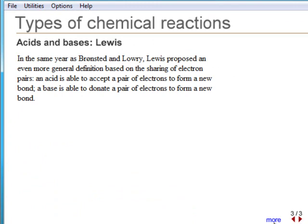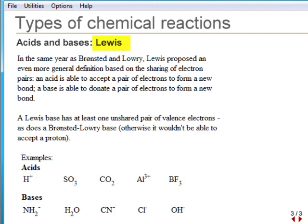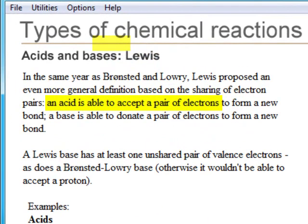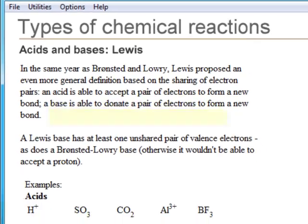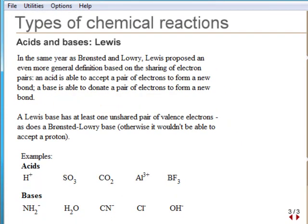The most general definition of an acid and base is due to Lewis. In this definition, an acid is an electron pair acceptor, and a base is an electron pair donor. In this definition, we are not restricted to the type of solvent that are being used, and we are not restricted to the compounds that contain protons.